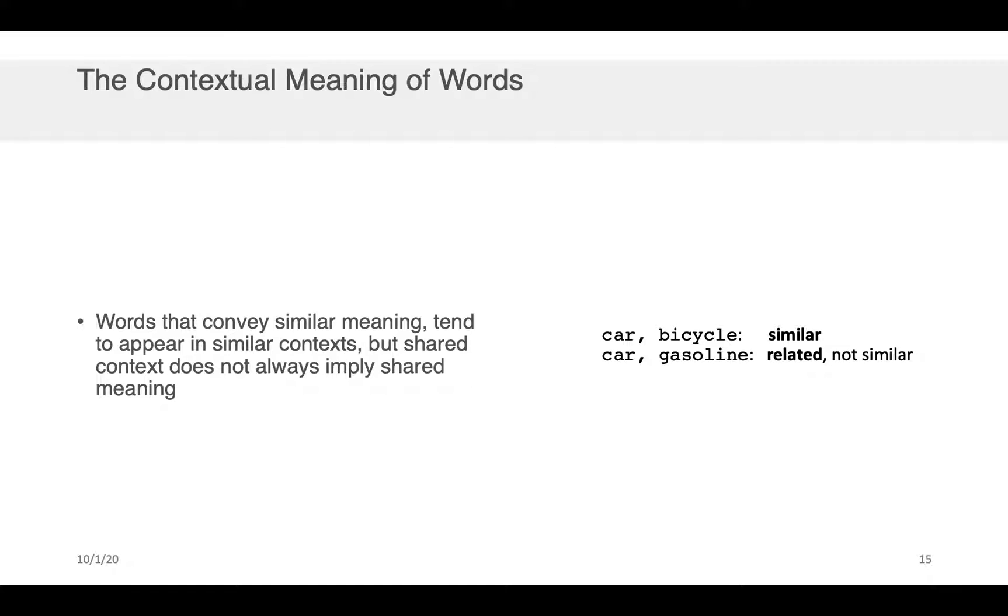So words that convey similar meaning obviously tend to occur in similar contexts. So for example, if we were to go look at every sentence that's ever been written in English and we look at particular words and how they appear within those sentences, it's probably more likely that the context that car appears in is going to be similar to the context that bicycle appears in, if we compare that to, for instance, how car appears with the word, let's say, human.